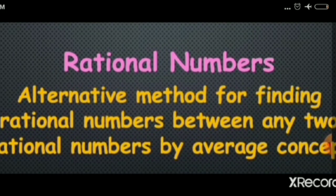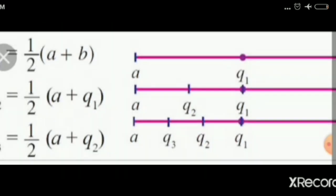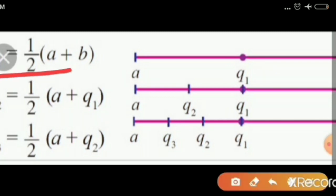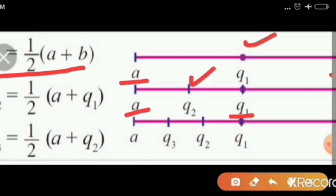The next topic is the alternative method for finding rational numbers between any two rational numbers using the average concept. Using a number line, the formula is: Q1 equals 1 by 2 into A plus B. The average between A and B gives Q1. Then the average between A and Q1 gives Q2, and the average between A and Q2 gives Q3.